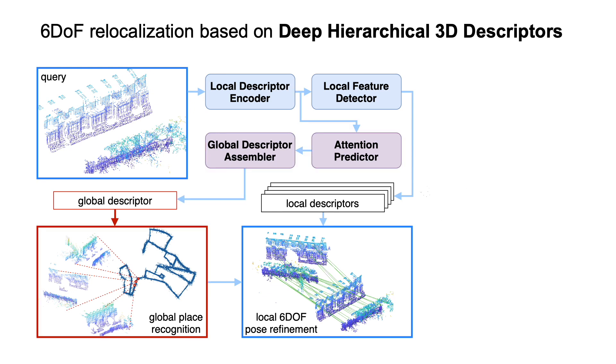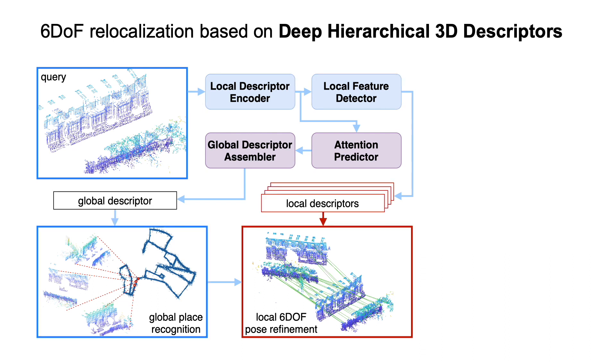During inference, the global descriptor is used to retrieve similar scenes from the database. Then the refined pose is obtained by matching the local features.